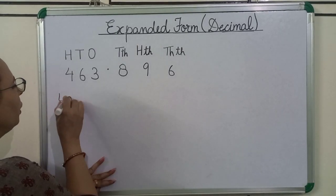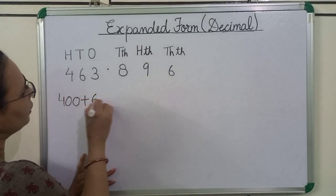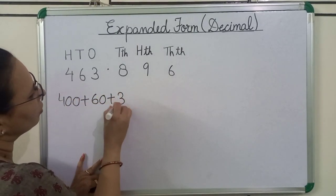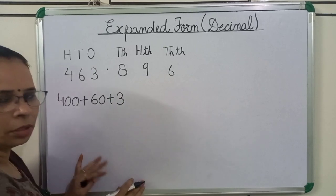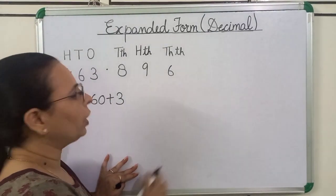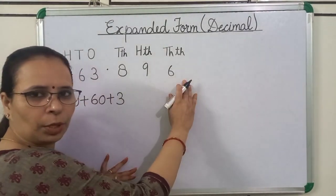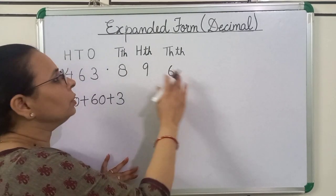The whole number expands as 400 plus 60 plus 3. Now we will expand the decimal part.